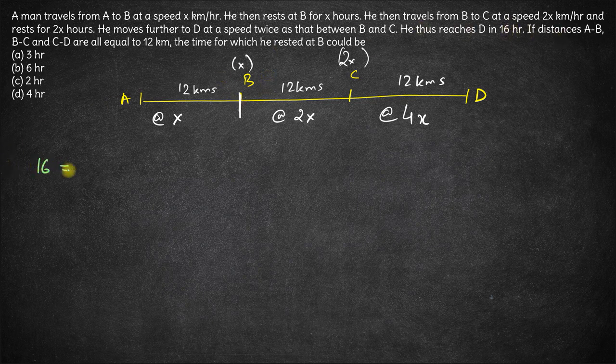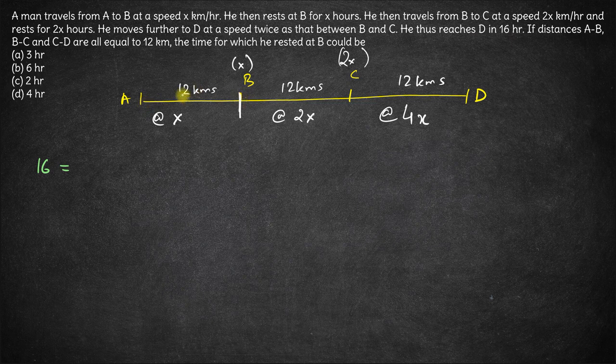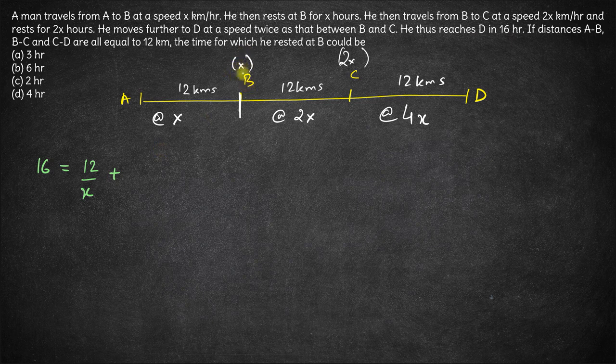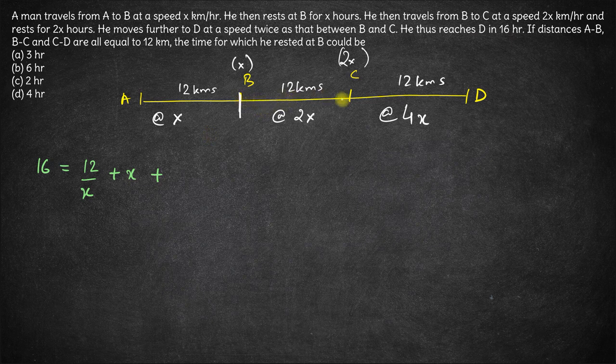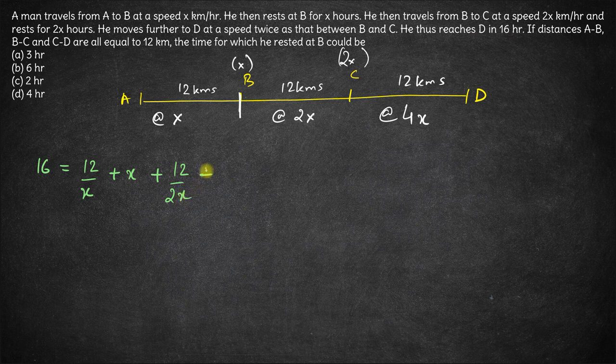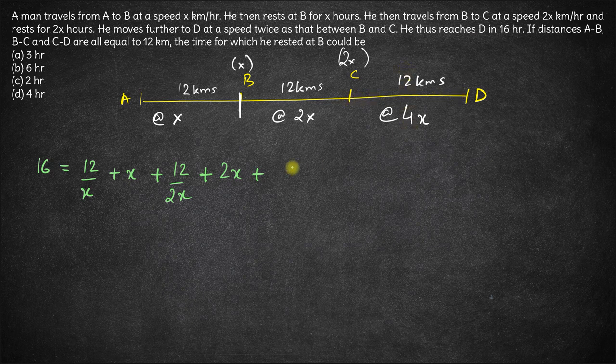So the total time 16 hours is time taken to go from A to B that will be 12 upon speed, distance upon speed, plus the time it rests at B, which is x hours, plus the time taken to go from B to C, which is 12 upon 2x, plus the time rested at C, which is 2x, plus the time taken to go from C to D, which is 12 by 4x.